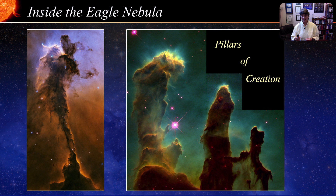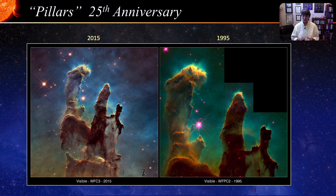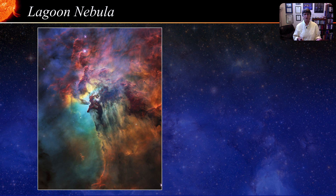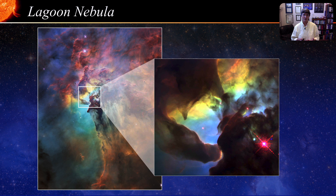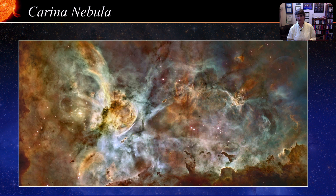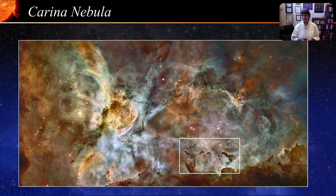Here is the 25th anniversary release of the Pillars of Creation, taken with Hubble's updated camera, also released in the infrared showing much more detail. This is a beautiful image of the star-forming region in the Laguna Nebula, and here is a closer look at the somewhat eerie-looking central structures of gas and dust. This small portion of the Carina Nebula seems like a beautiful painted landscape. And here is a magnificent panoramic view of the central region of the Carina Nebula — Hubble has zoomed in on many areas, but we will take a look at two of them.